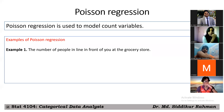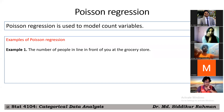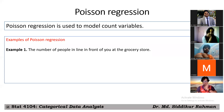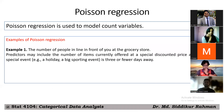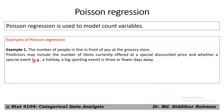This kind of modeling is very common in categorical data analysis. The predictor might be different types of variables — it might be categorical or quantitative — no problem. But you should look at your response variable: if the response variable is count in nature, you can use the Poisson regression model. For example, predictors could be the number of items currently offered at a special discount price, and whether a special event such as a holiday or big sporting event is a few days away.